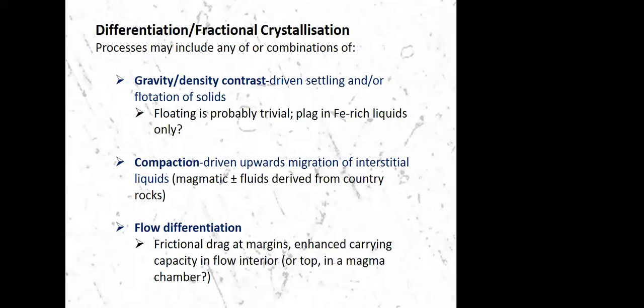Then we have the process of compaction, so a kind of filter pressing where the compacting cumulus mineral pile squeezes out the interstitial liquids and they then ascend up through the pile. So in the exact same way as in the sedimentary basin, as we push the connate fluids up towards the surface. And the role of compaction also seems to depend on the crystallization circumstances. It can't be universally assumed to be happening throughout a layered intrusion necessarily. Lots of textural evidence that suggests in certain cases, such as in the Skaergaard, there's not effective compaction happening.